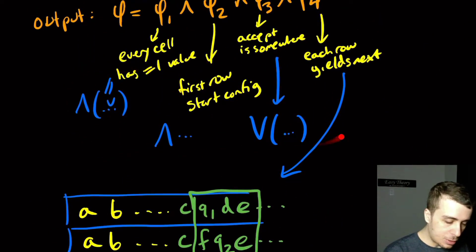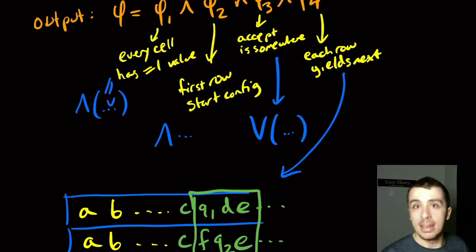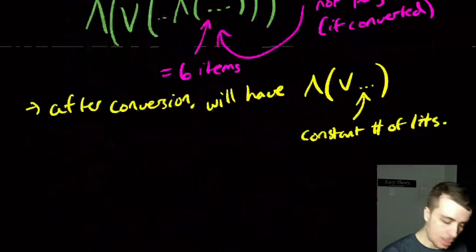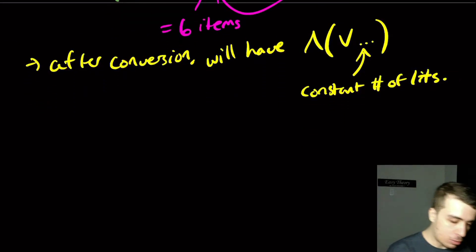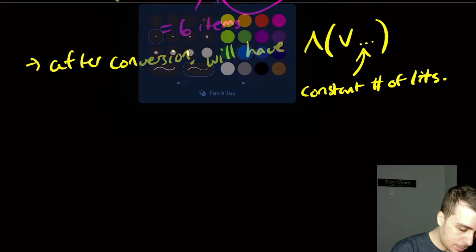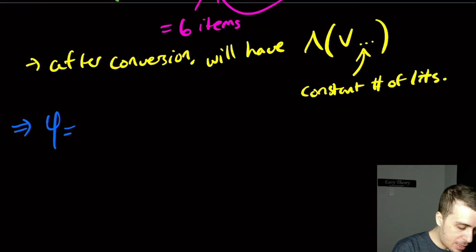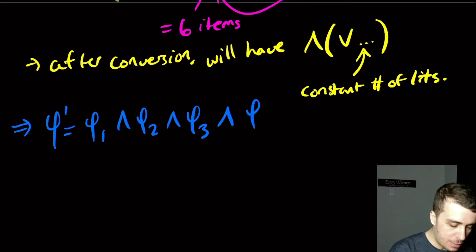So the three formulas right here had no need for any conversion to get into conjunctive normal form. This one, φ4, does need to be converted, but we can convert it with only a change in the constant in the size of the formula, which will still make it a constant. So at this point, we have φ prime. So φ1 is unchanged, φ2 is unchanged, φ3 is unchanged, and φ4 changed, but this is of poly size, which is great.